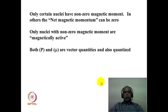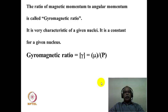Only certain nuclei have a non-zero magnetic moment; in other words, the net magnetic moment can also be zero in certain nuclei. Only nuclei with non-zero magnetic moment are magnetically active and useful for nuclear magnetic resonance spectroscopy. Both the angular momentum and the magnetic momentum are vector quantities and, according to quantum chemistry, are quantized in nature. The ratio of the magnetic momentum to the angular momentum is referred to as the gyromagnetic ratio, γ, which is a fundamental constant of a given nucleus and an important parameter in NMR spectroscopy.